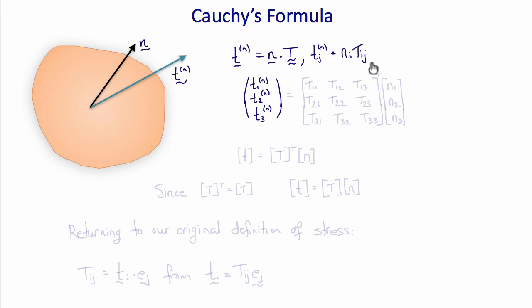If we were to write this out in matrix notation, we would say that the three components of the traction vector acting on the unit surface with unit normal n is equal to the nine components of the stress tensor times the unit normal vector.